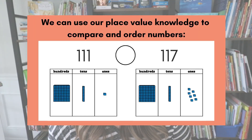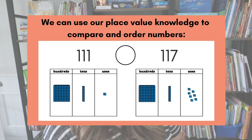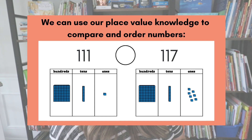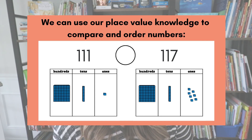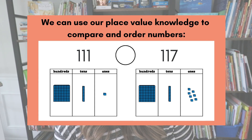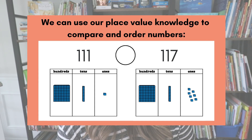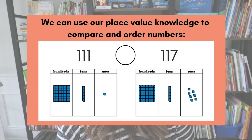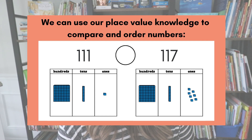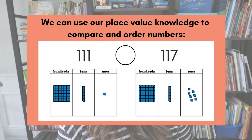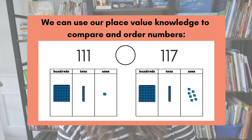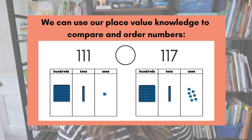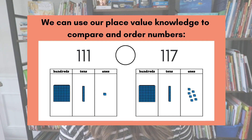Then we had our explicit teaching slide: 'We can use our place value knowledge to compare and order numbers.' I read that aloud and explained that is exactly what we are going to do today. I walked students through how I would compare these numbers — 111 and 117. I talked about how they both have a one in the hundreds place and a one in the tens place, so I need to go down to the ones place to compare them, and we had the visual of base 10 blocks.